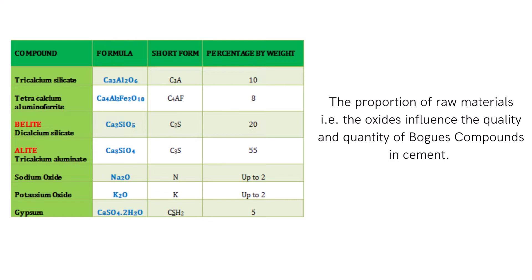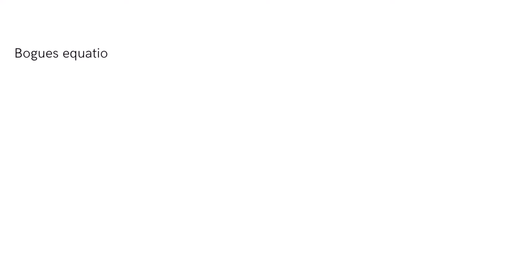The proportion of raw materials, that is the oxides, influences the quality and quantity of Bogue compounds in cement. So the selection of raw materials for cement manufacture plays an important role in the quality and quantity of Bogue compounds that are formed.